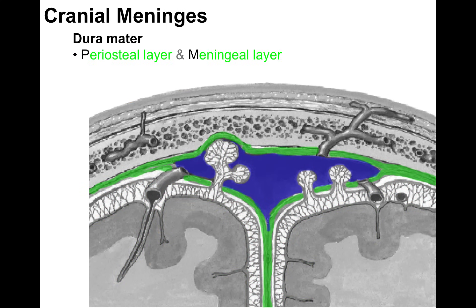The dura mater in the head differs from the spinal cord in that it has two layers fused together that separate in a few places. The periosteal layer hugs the skull, and the meningeal layer faces the brain parenchyma. Where these two layers separate, a dural venous sinus forms. Dural venous sinuses are like veins — they transport deoxygenated blood — but they lack a tunica media (smooth muscle layer) and lack valves.